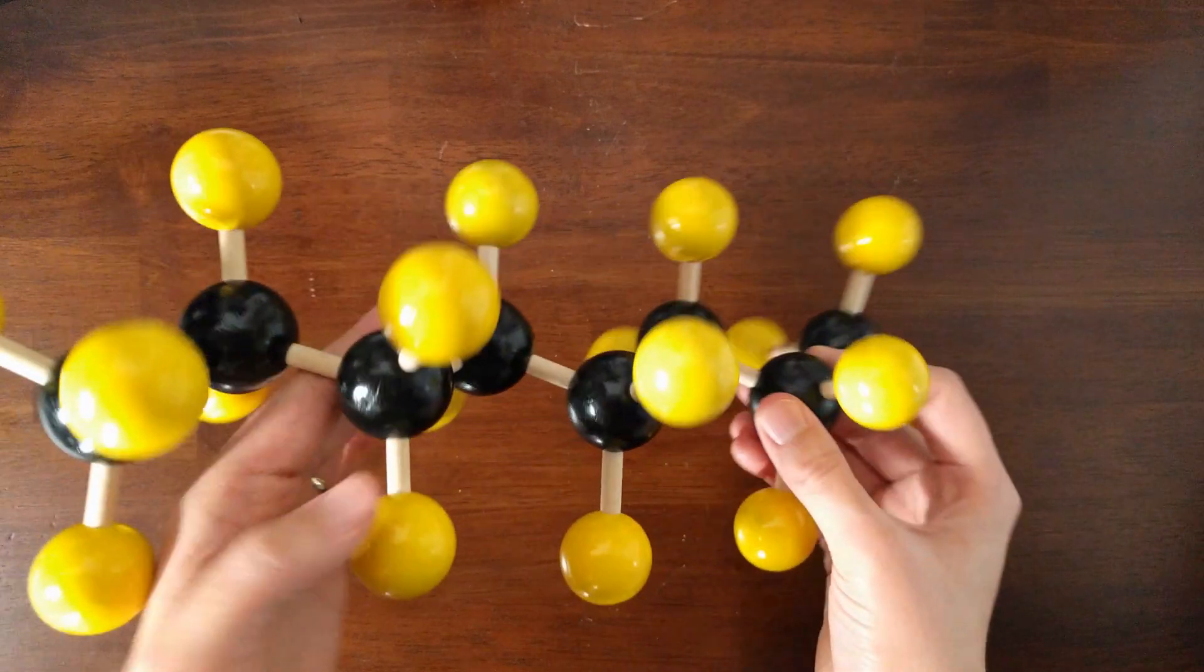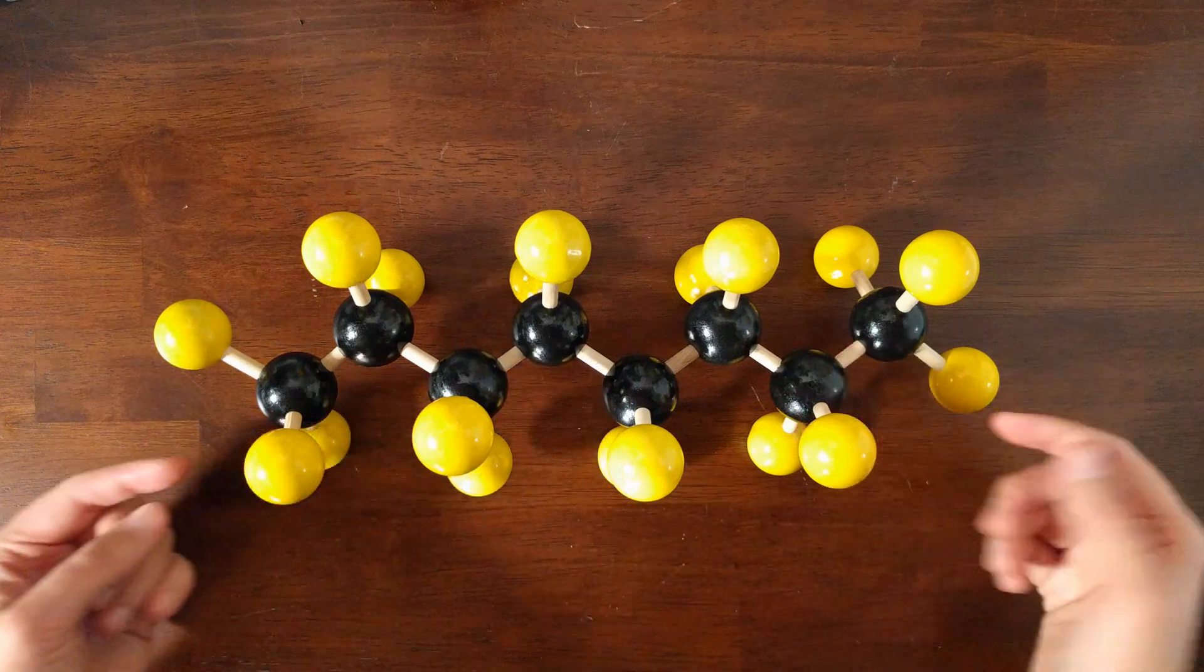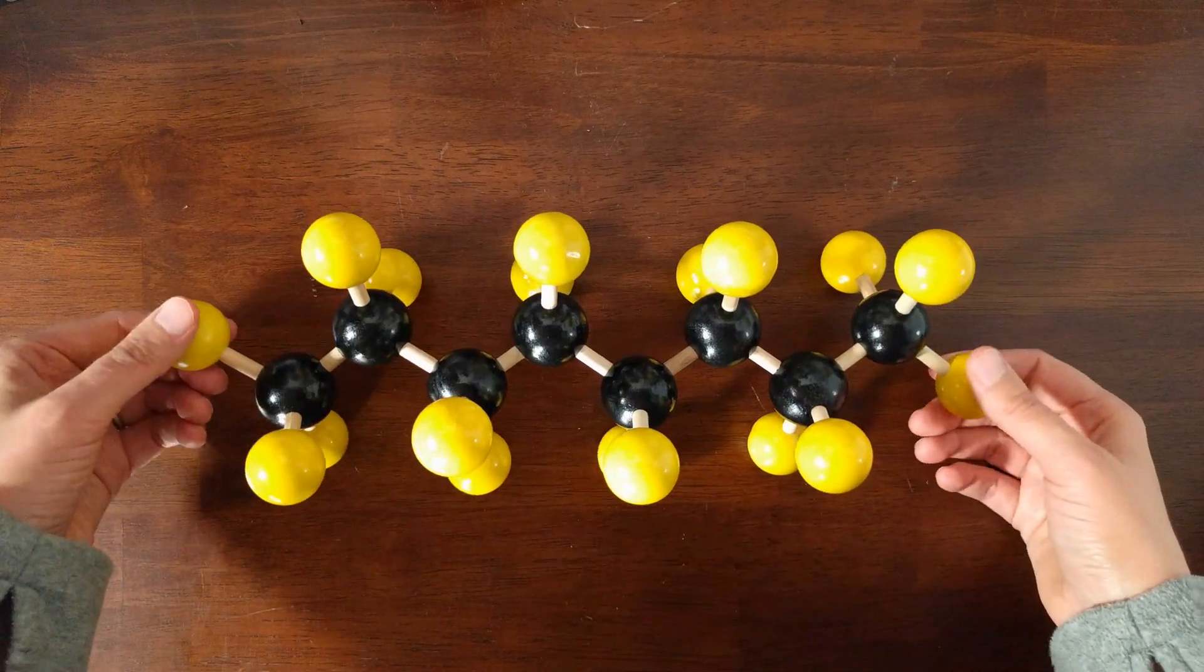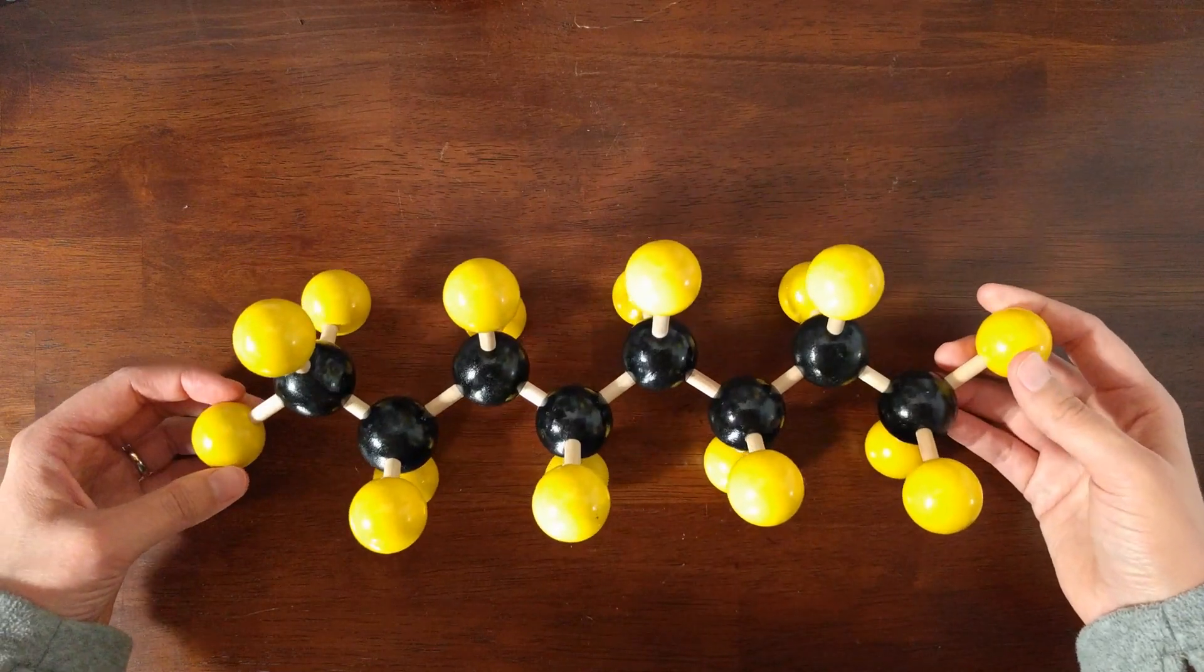So let's see what this looks like. Our most stable conformation of octane is a zigzag. This is going to be true of all alkanes. Their most stable conformation is a zigzag.